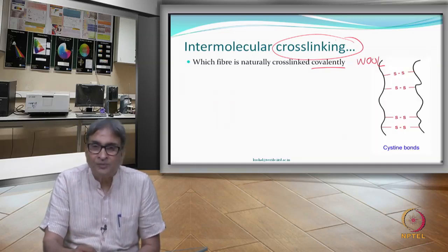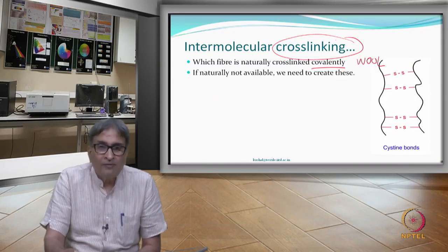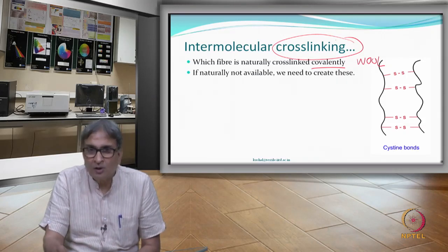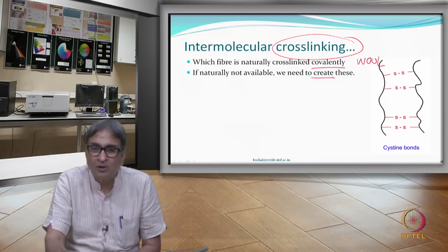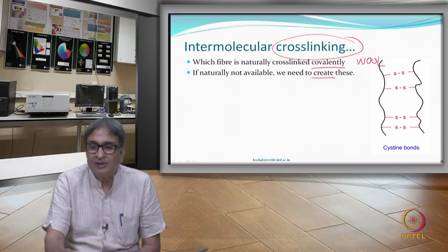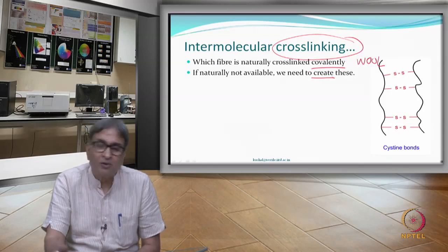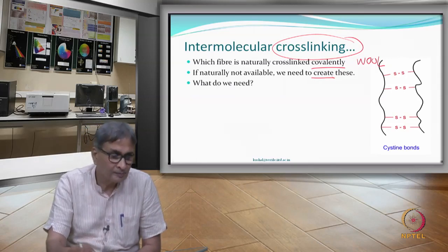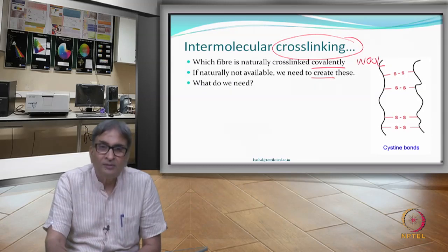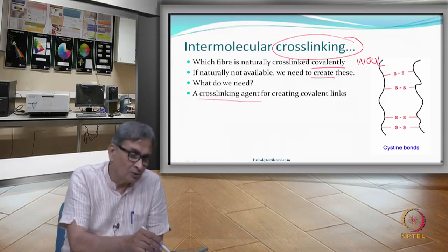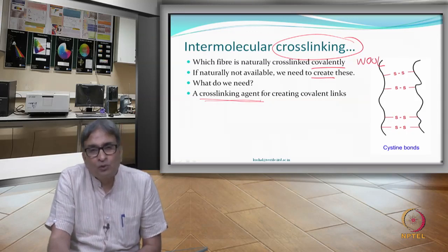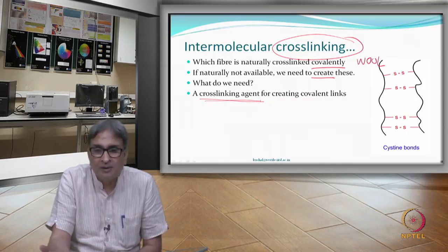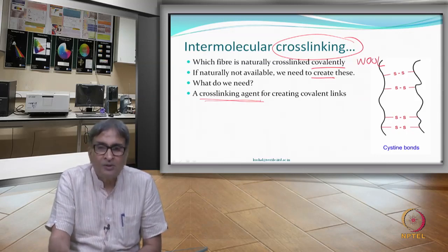That is the way we look at wool. If naturally these crosslinks are not available, then we have to create them. We now have a principle: if we can create intermolecular cross links, we have an opportunity to see that recovery becomes better — and resistance will also increase, but we are more interested in recovery. So we need a cross linking agent. The chemistry of a compound is equally important — there should be cross linking agents which can react with the molecules of the fibre to create covalent bonds.